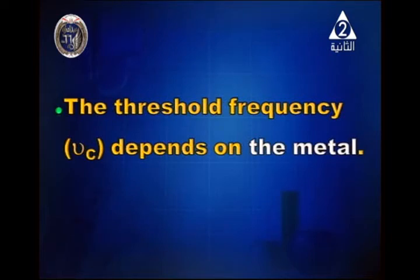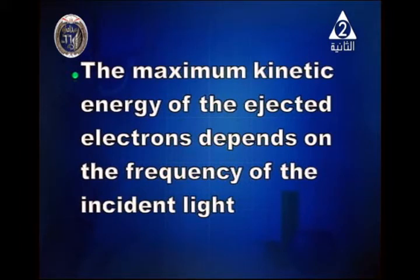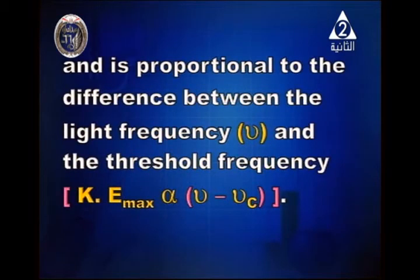The threshold frequency depends on the metal. The maximum kinetic energy of the ejected electrons depends on the frequency of the incident light — this is a very important piece of information. Kinetic energy of the emitted electrons depends on the frequency of the incident radiation, not the intensity, and it is proportional to the difference between the light frequency ν and the threshold frequency νc.